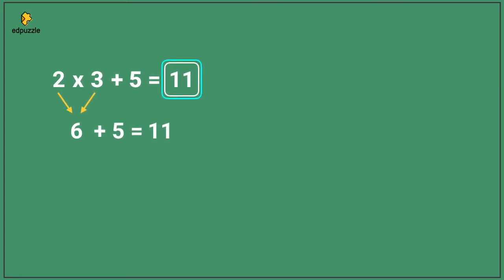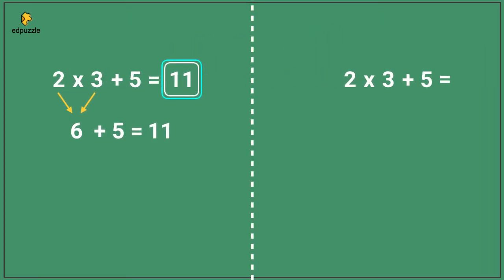Now let's look at the same problem, but this time we're going to put parentheses around 3 plus 5. The problem now reads 2 times (3 plus 5). When we have parentheses in a problem, we must do the operation inside of the parentheses first.